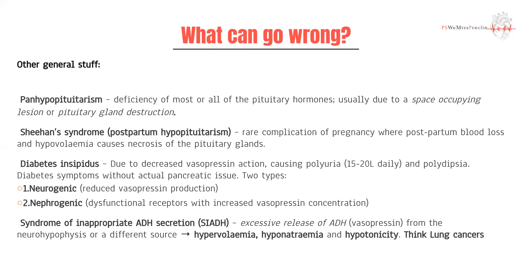You can also have diabetes insipidus, caused by decreased action of vasopressin, producing polyuria — up to 15 to 20 liters of urine per day — along with polydipsia. This gives diabetic-like symptoms without pancreatic or insulin issues. There are two types: neurogenic, where you aren't producing enough vasopressin or ADH; and nephrogenic, where you produce enough ADH but there's a receptor issue at the kidneys. A key differentiating test is to give exogenous ADH — if symptoms resolve, it's likely neurogenic; if not, it's nephrogenic.